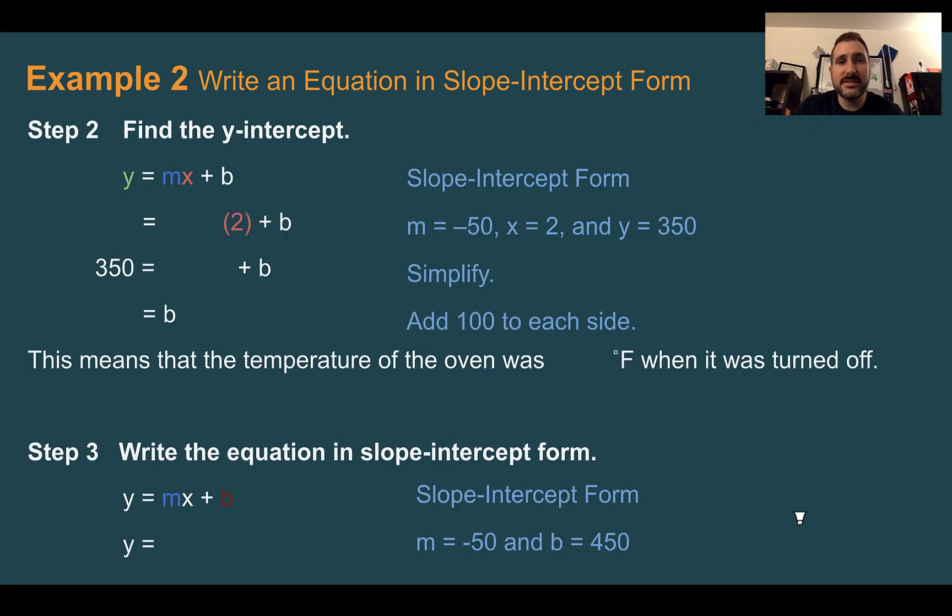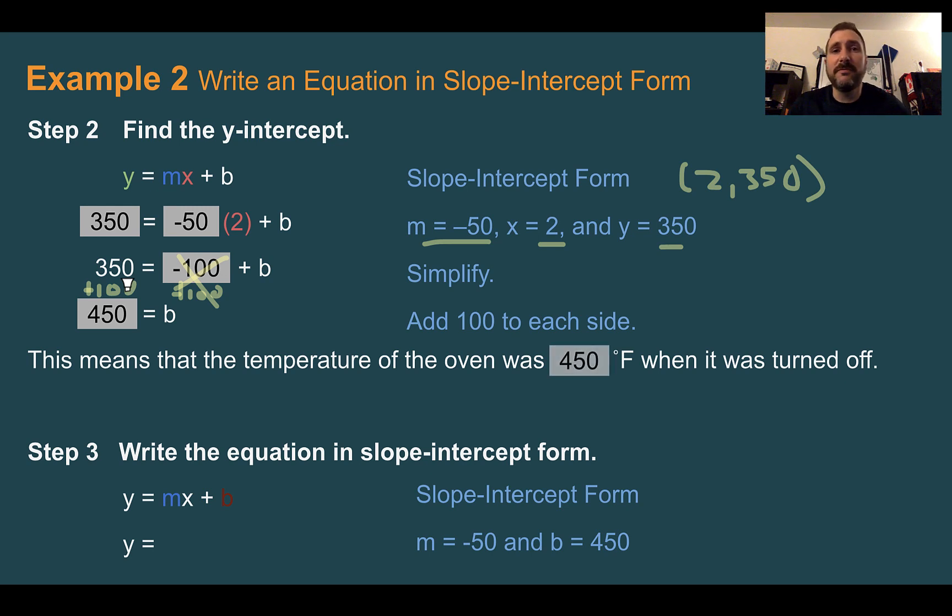Now that we know those two things, we have our slope and we have our coordinate. That was (2, 350). We can plug those values in. So negative 50 we can plug in for m. 2 is already shown as plugged in for x. So 350 must need to go in for y. Now we're going to simplify it out and solve for b. So negative 50 times 2 is negative 100. Then to get b by itself we would add 100 to both sides so that they cancel out on the side with b. 350 plus 100 is 450. So in this context that would mean that the temperature of the oven was 450 degrees to start or when it was turned off.